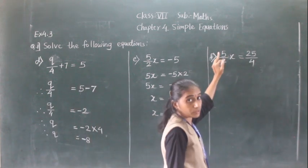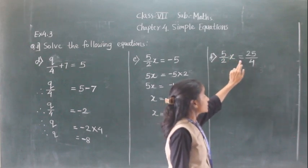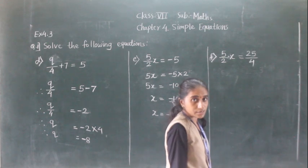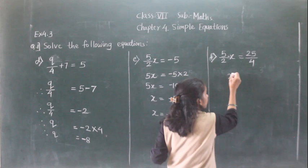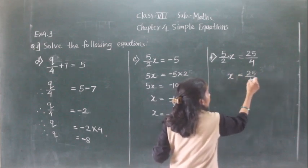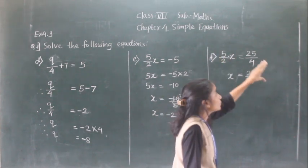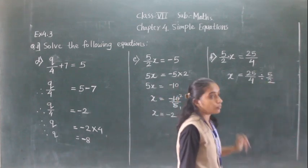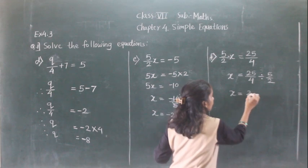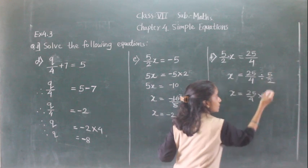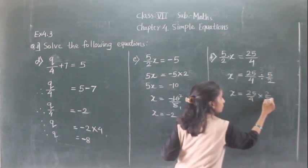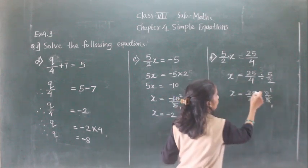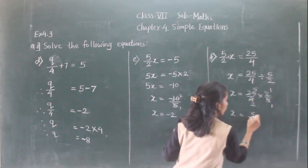Last example: (5/2)x = 25/4. The term 5/2 is multiplied with x. To separate the variable, transfer 5/2 to the right-hand side where it becomes division. So x = (25/4) divided by (5/2). Dividing by 5/2 means multiplying by 2/5. So x = (25/4) times (2/5) = 50/20, simplified to x = 5/2.